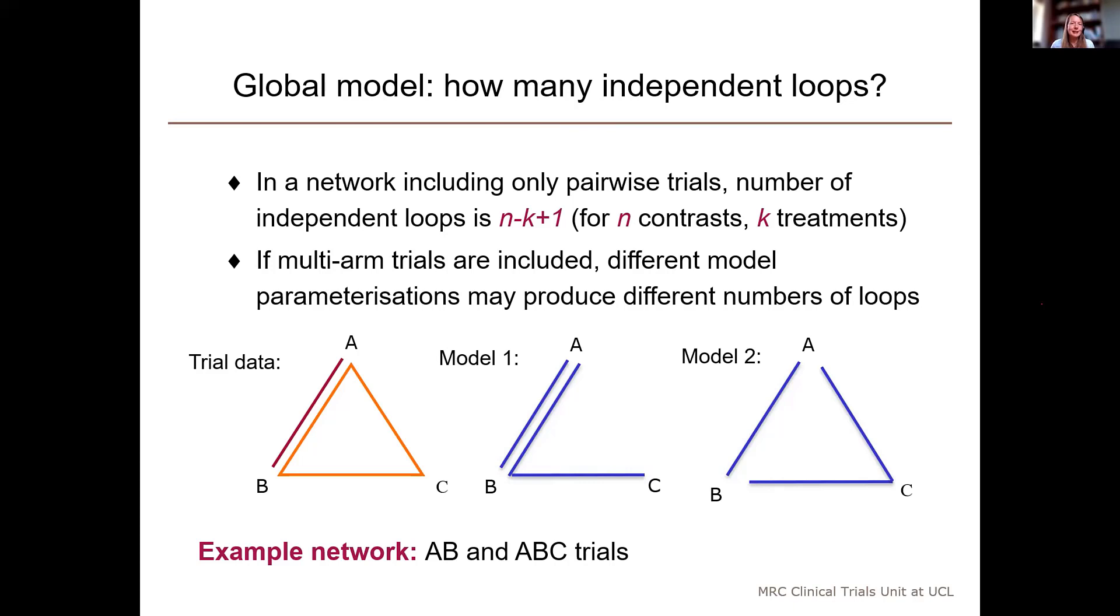So, to demonstrate this in an example, I've assumed that we have a pairwise trial comparing treatments A and B and a three-arm trial comparing A, B and C. So, on this slide, the red and orange figure on the left illustrates the trial data. And the blue figures show two different ways of fitting a network meta-analysis model. When we fit the model, we can choose which two contrasts to fit to the ABC trial data. The third contrast for that trial can be derived from the other two because a multi-arm trial has to be consistent within itself.